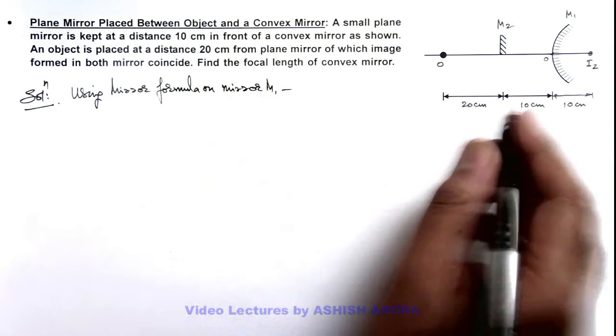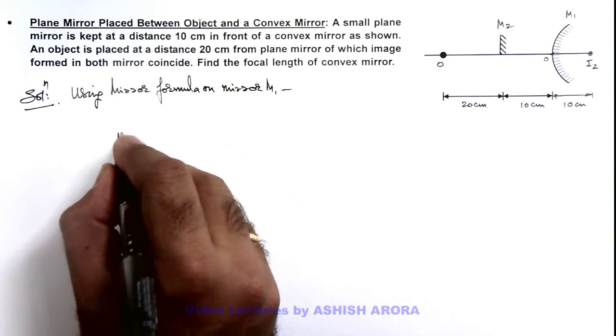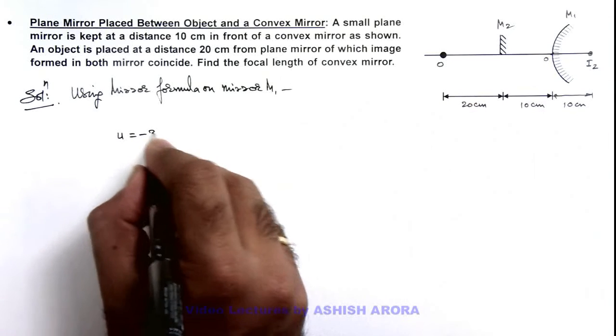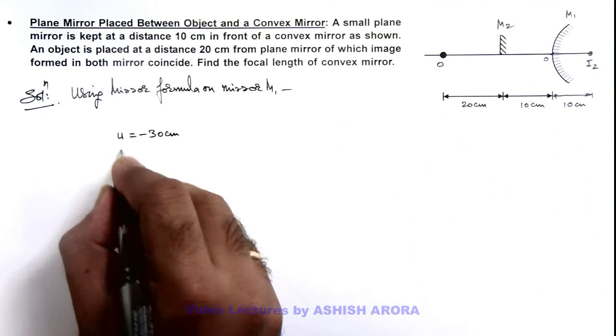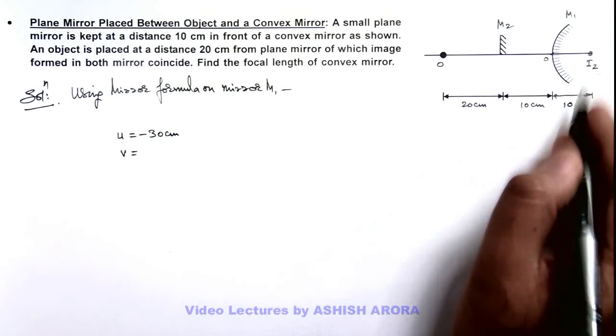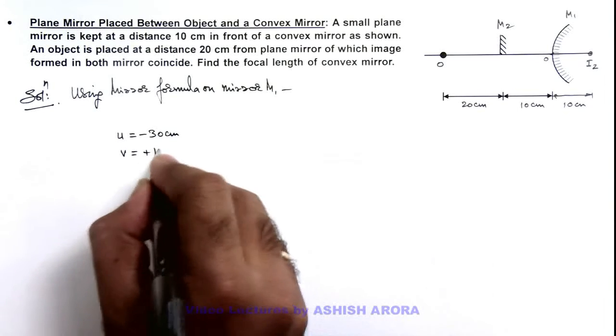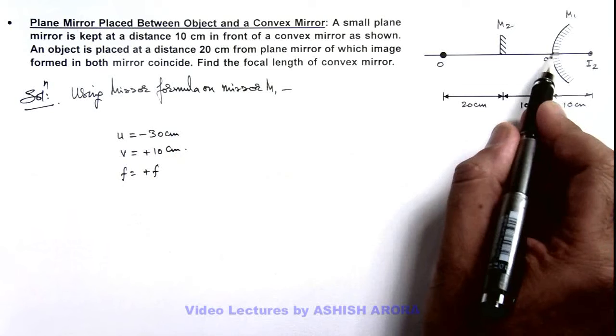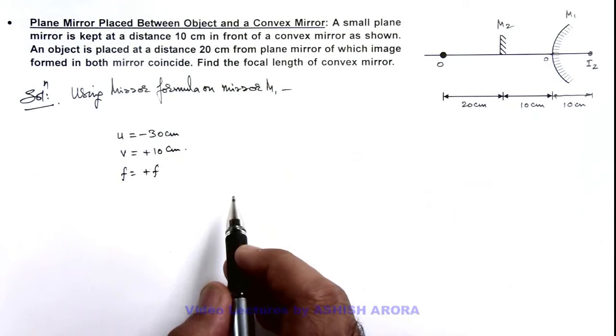For this mirror m1, we can take the object distance u to be minus 30 centimeters. The image distance is already given to us; it is plus 10 centimeters. We take the focal length as plus f because it is on the right side of this mirror.